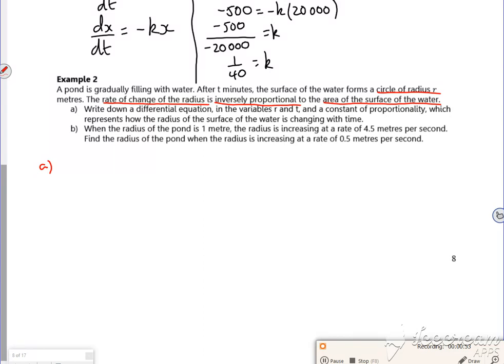So the rate of change of the radius, DR, the change in the radius. It doesn't tell us what it changes with, so we assume it's time, is inversely proportional, so that's one over the area of the puddle. So if I introduce a constant of proportionality, it's K times 1 over A.